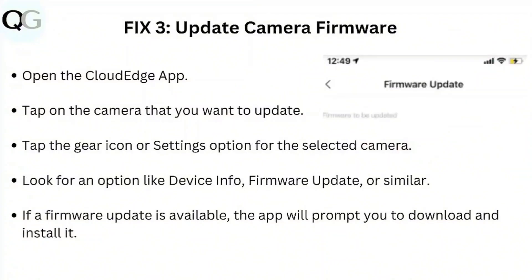Step three: update camera firmware. Open the Cloud Edge app, tap on the camera that you want to update, then tap the gear icon or settings option for your selected camera. Look for an option like device info, firmware update, or similar. If a firmware update is available, the app will prompt you to download and install it.